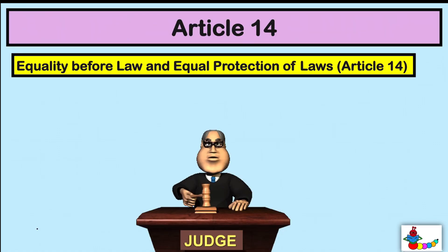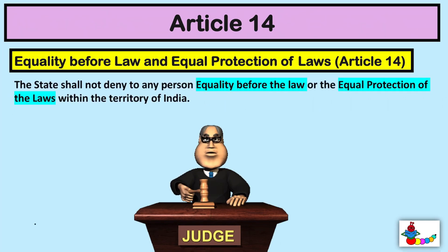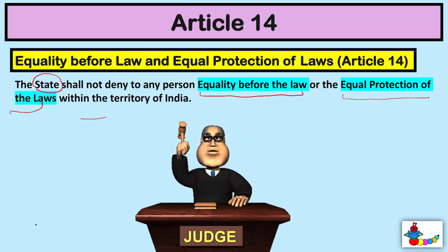From Article 14, we start our fundamental rights. Before Article 12 is the State's definition, and in Article 13, law's definition as well as its jurisdiction has been covered. Article 14 is very small — it is only two lines. It says: the State shall not deny to any person equality before the law or the equal protection of laws within the territory of India.